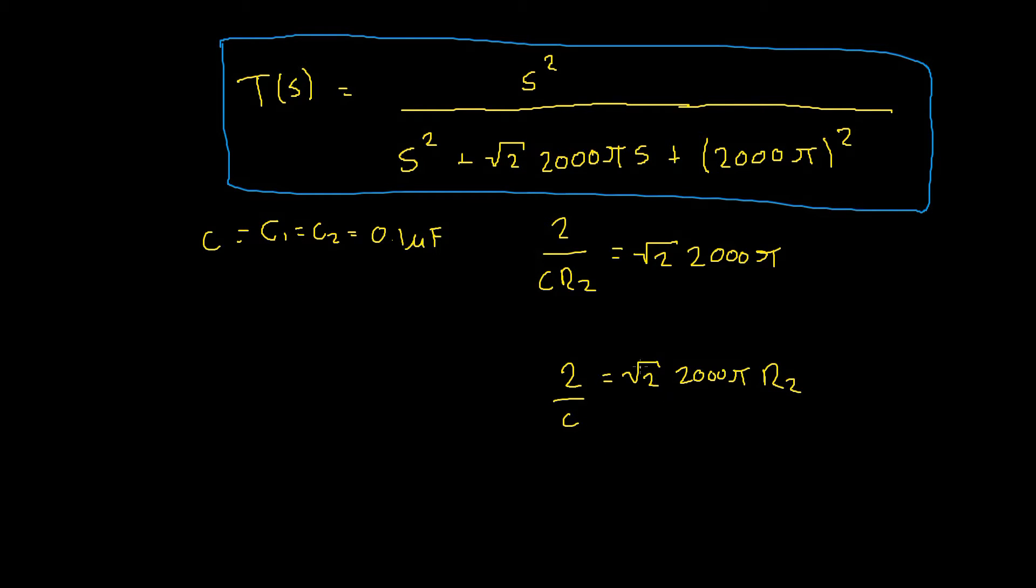then we can divide through by root 2, 2000 pi which will give us 2 divided by C times root 2 times 2000 pi equals R2. As we know our value for C, we can plug this in and get a value for R2,